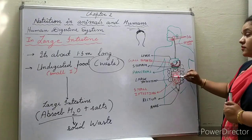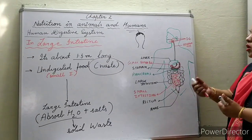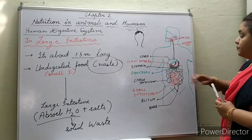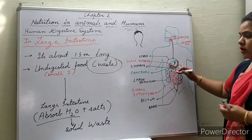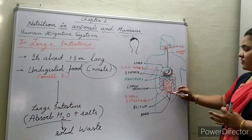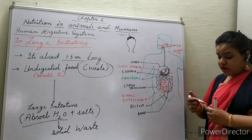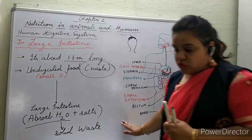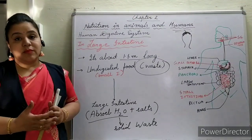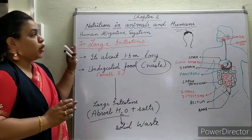The food in the large intestine — which is now waste — is dried and made solid. This solid waste enters the rectum and is removed from the body through the anus. That completes the overview of the human digestive system.